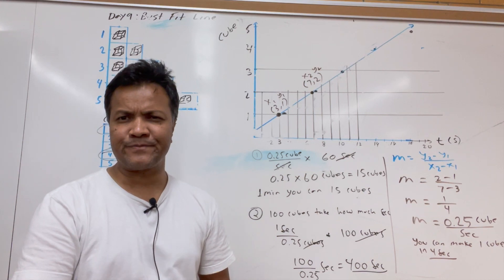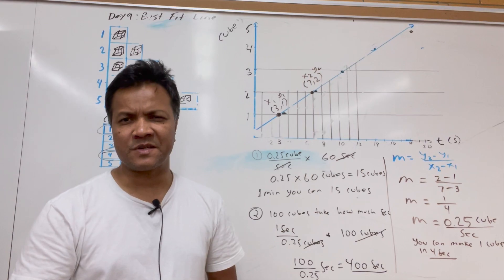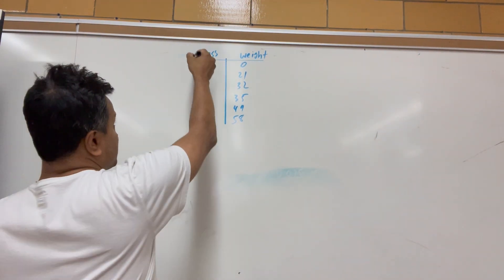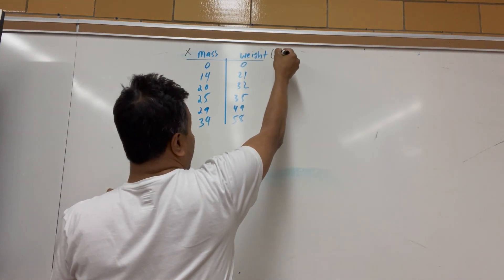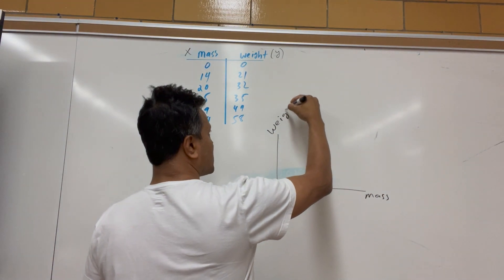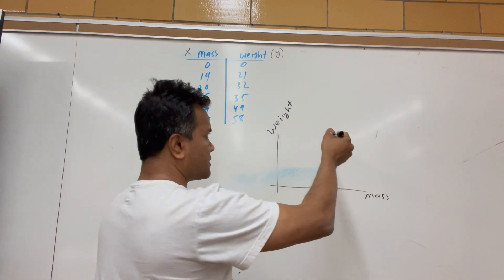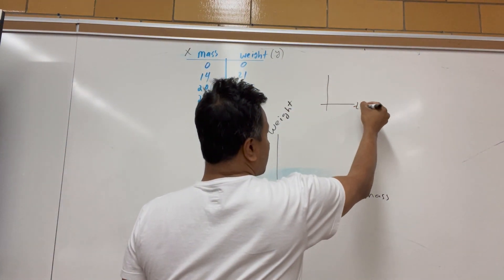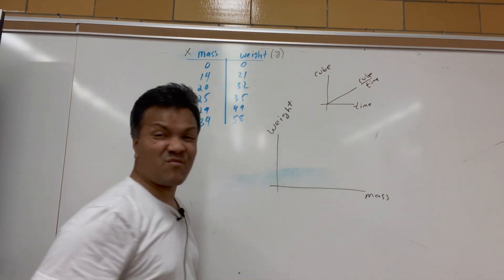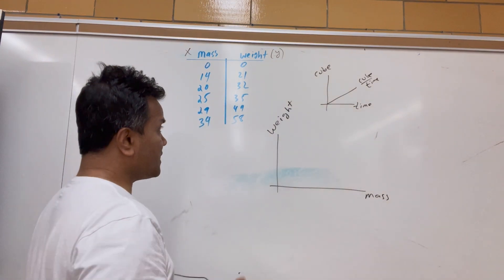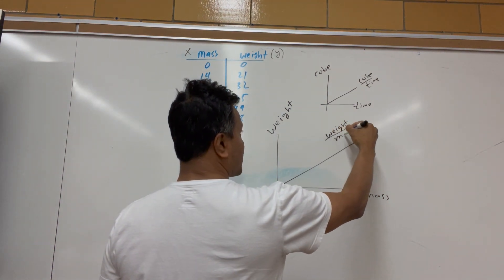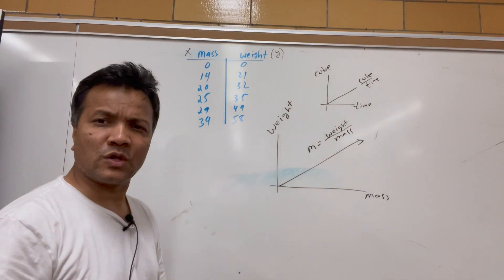We're going to do linear regression using the TI-84. The x-axis is mass and the y-axis is weight. Last time we had time and cubes with no special name for the slope, but weight over mass does have a name — that name is acceleration.